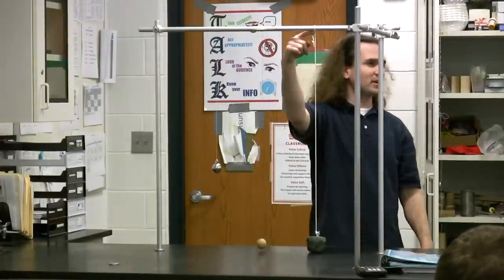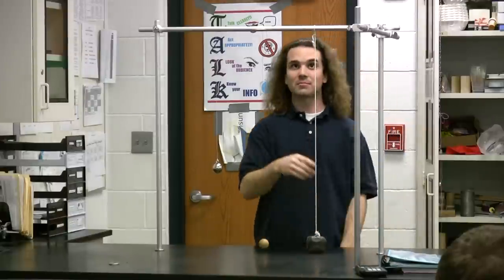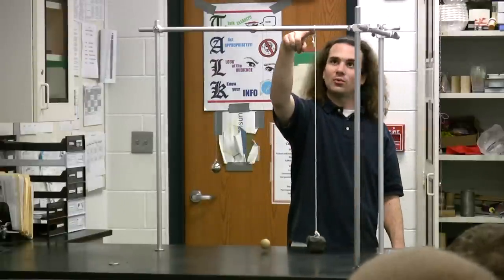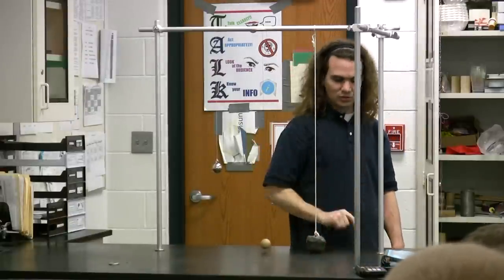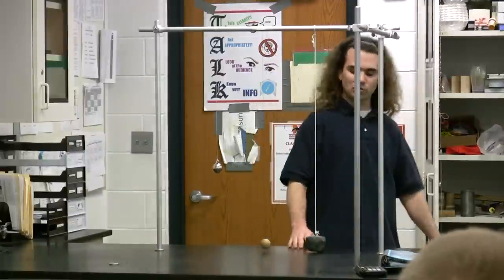Right here I have some pendulums set up for you. You can see right here up at the very top, this is technically called the center of suspension. The length is all the way from here down to the center of mass of the bob. Now I have three different bobs set up so that we can talk about and see how the equations work.